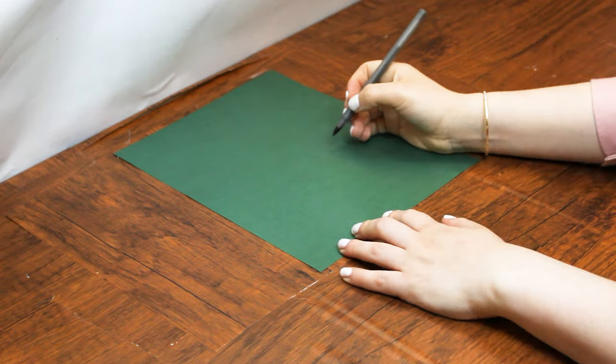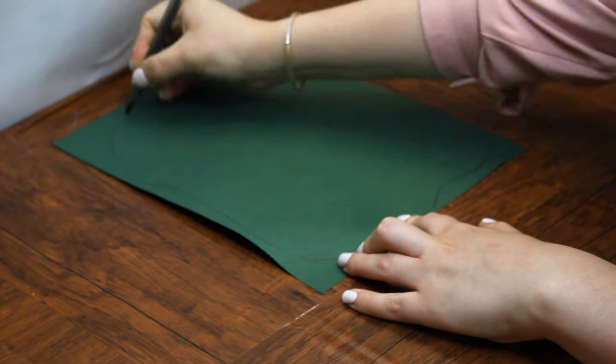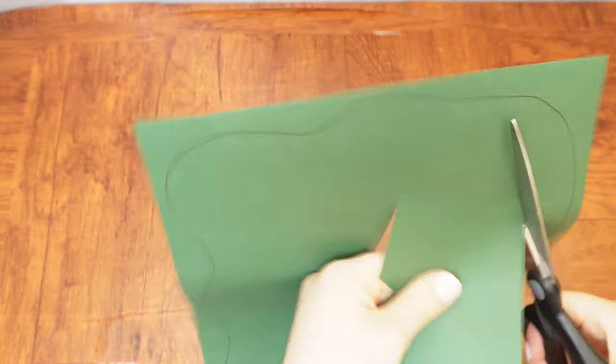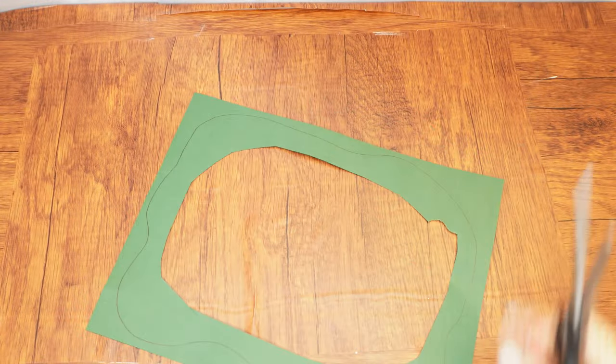Let's begin. Draw a large squiggly shape on the darkest piece of cardstock. The shape should take up most of the sheet. Fold the paper in half and make a few cuts in the middle.